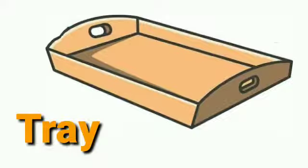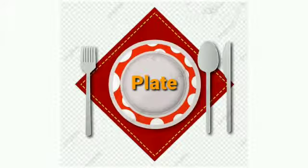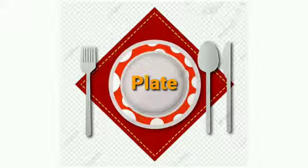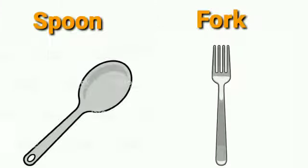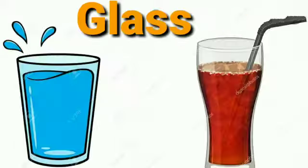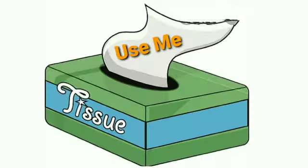A tray is used for serving food and cold drinks. This is a plate. We eat our food in a plate. This is a spoon and a fork which we use while eating. This is a glass.